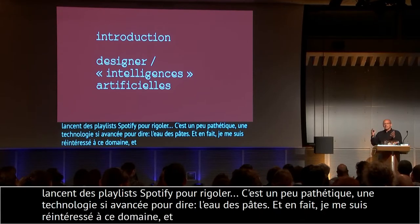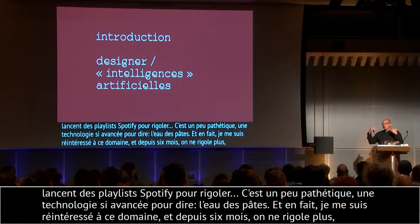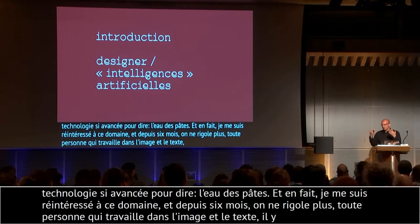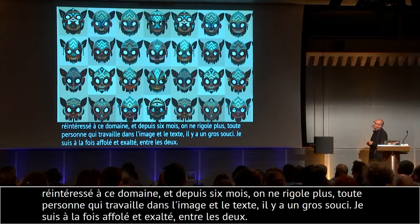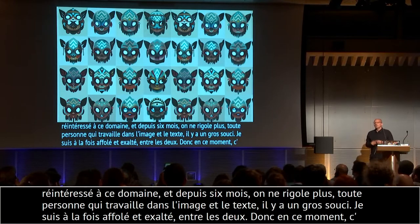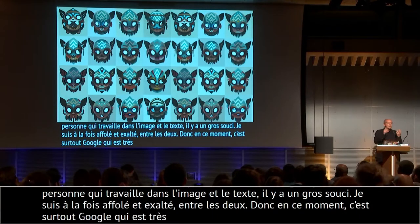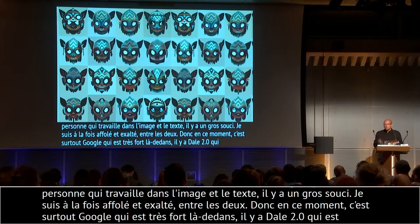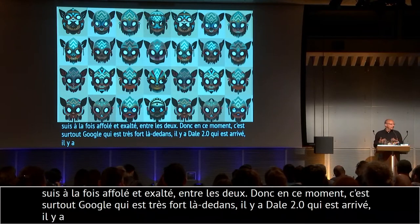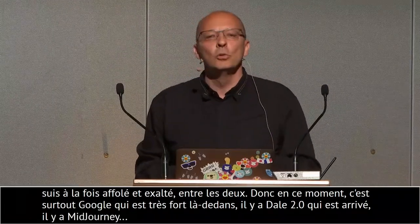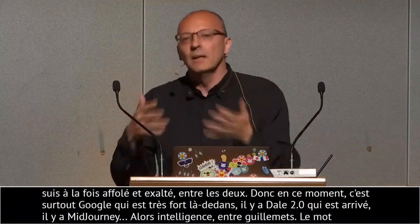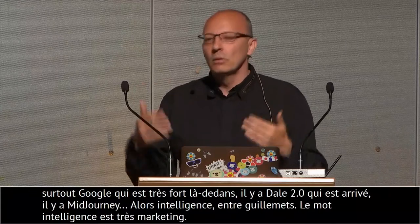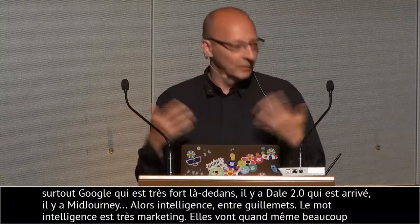Toute personne qui travaille dans l'image et le texte, là il y a un gros souci — je peux vous le dire. Moi je suis à la fois affolé et exalté. En ce moment il y a surtout Google qui est ultra fort là-dedans. Il y a Disco Diffusion, DALL-E 2.0 — avec Elon Musk derrière via OpenAI — et MidJourney. Il y a pas mal de moteurs d'intelligence artificielle, avec énormément de guillemets sur « intelligence ». On va parler de réseaux neuronaux, de machines apprenantes, d'apprentissage profond.